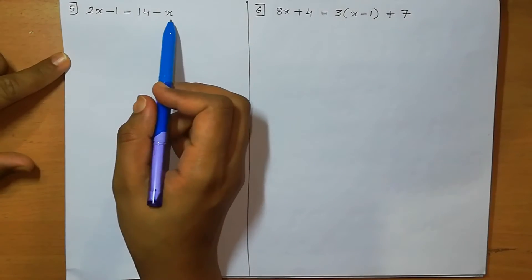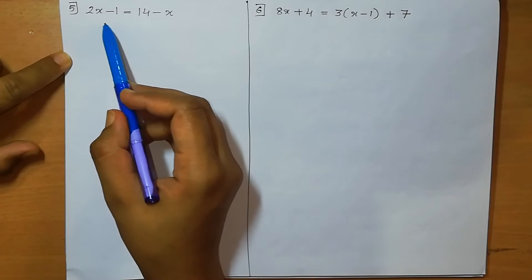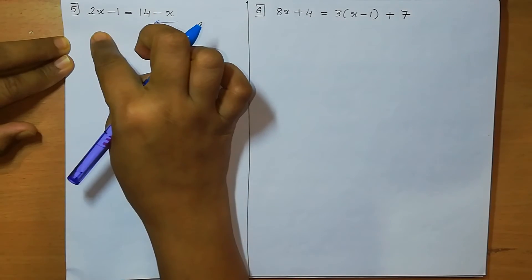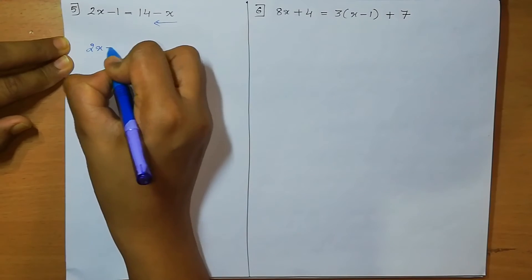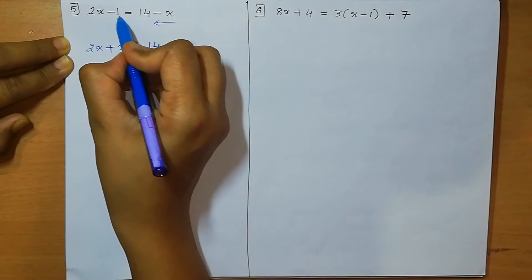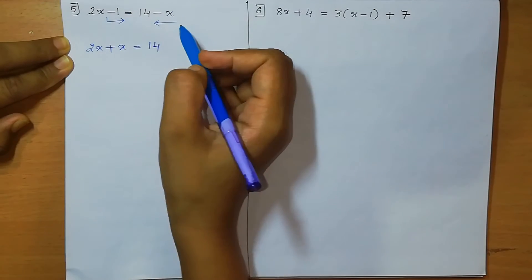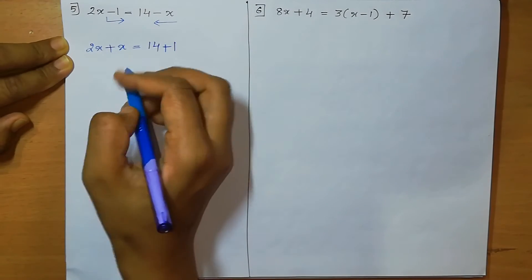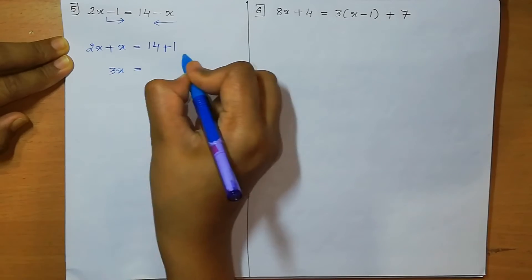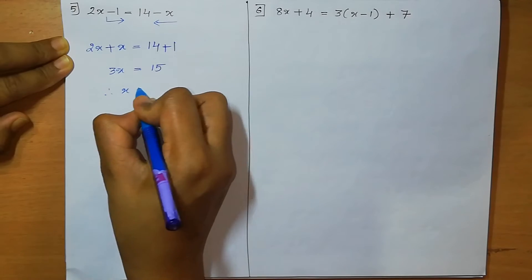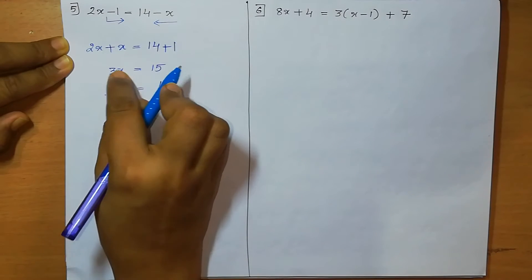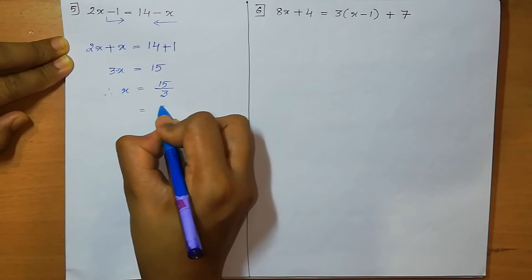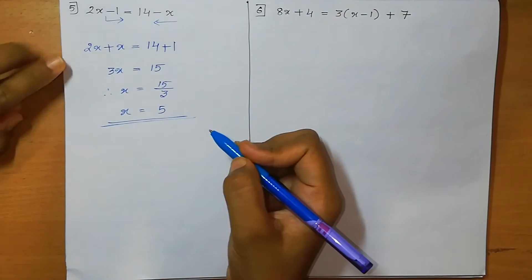Fifth one: 2x minus 1 = 14 minus x. We shift minus x to the left, making it plus x. So 2x + x = 14. Shifting minus 1 to the right gives plus 1: 3x = 14 + 1 = 15. Therefore x = 15 ÷ 3 = 5. The solution is x = 5.